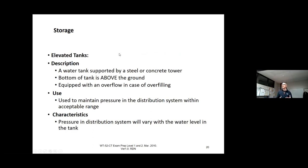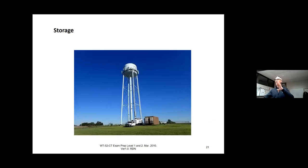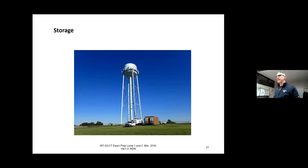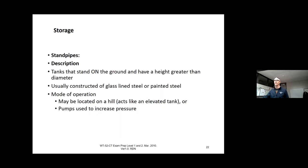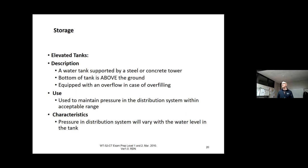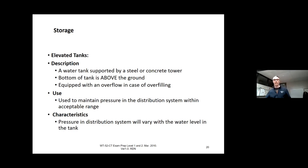Elevated tanks look like the picture here — in the background you can see a very flat area. In order to get the height or the gravity, I have to pump the water to the top of this tank. The height of that tank provides the pressure needed to bring water to people's houses. It's basically a water tank supported by a steel or concrete tower, with the tank way above the ground, to promote constant pressure to your distribution network.